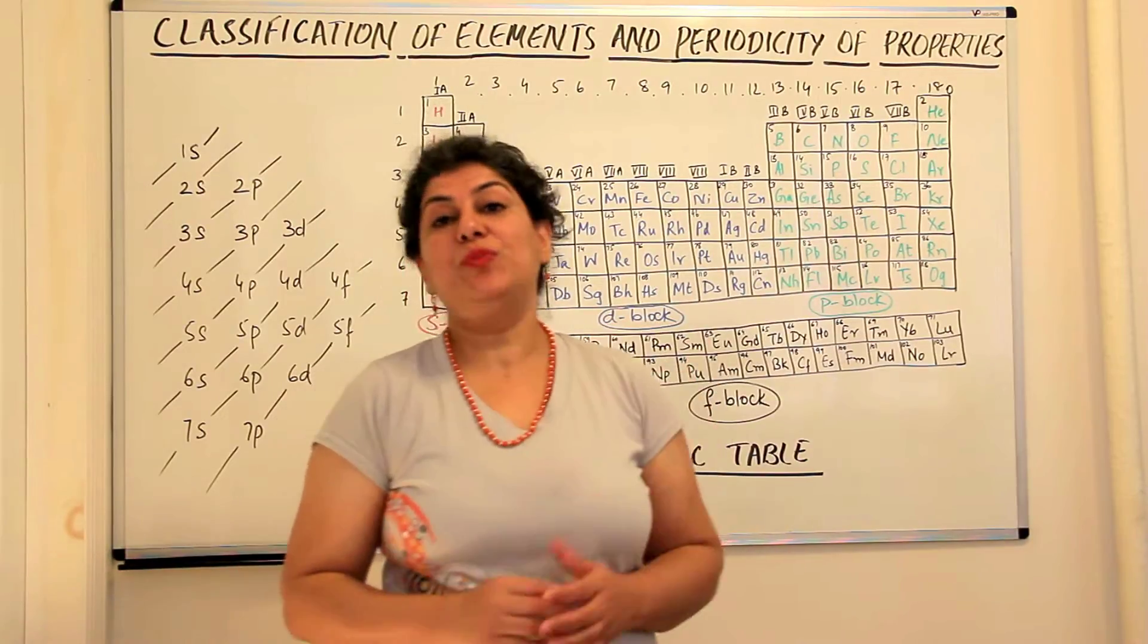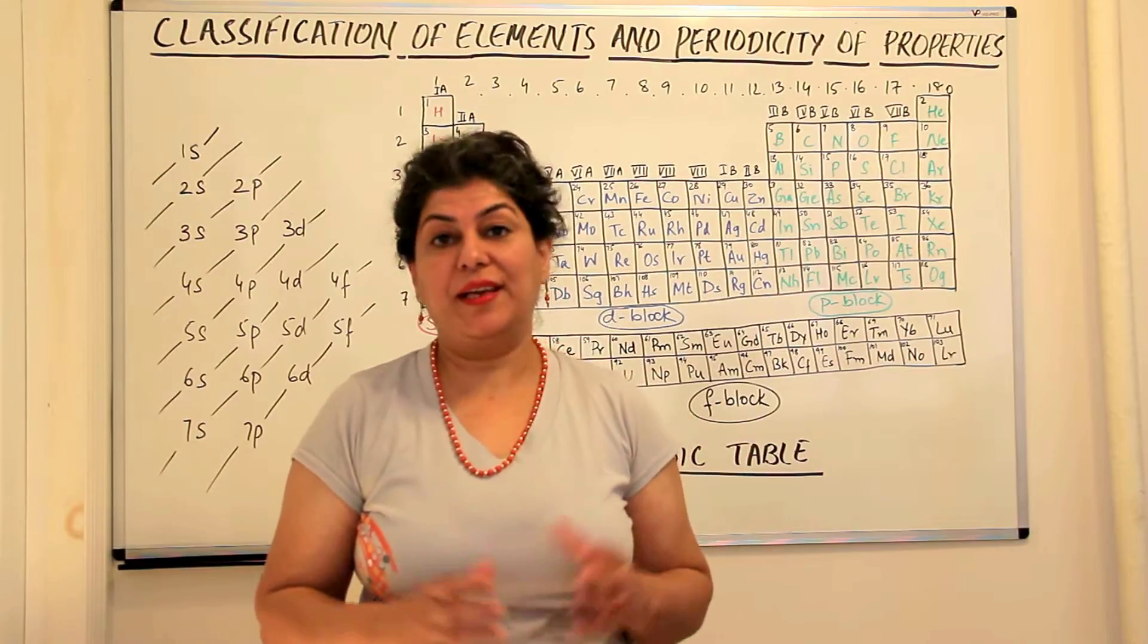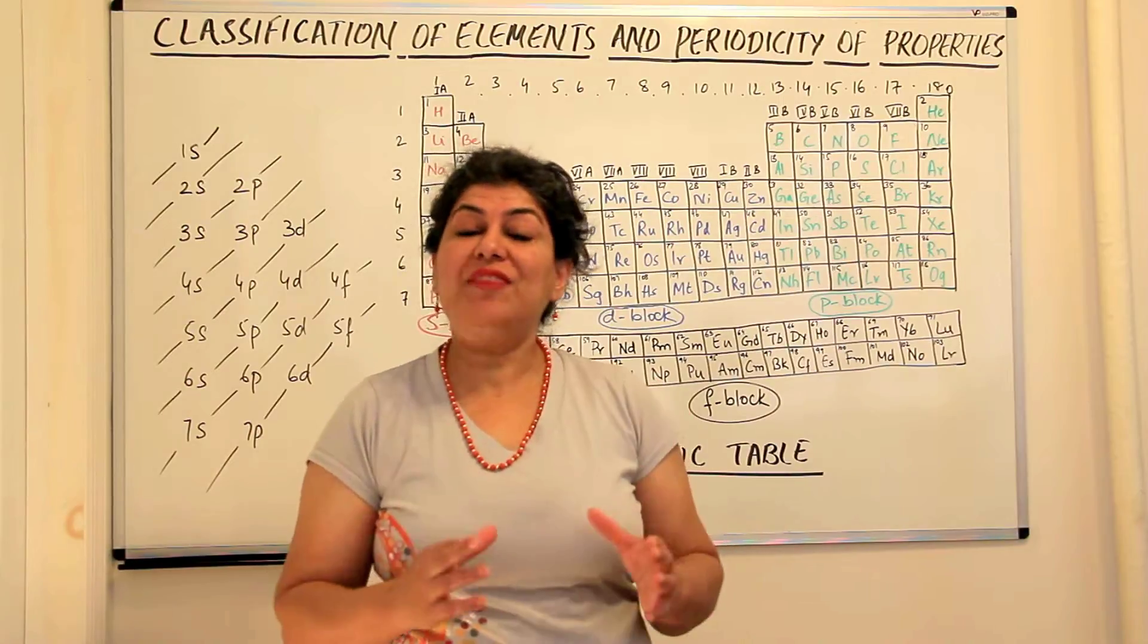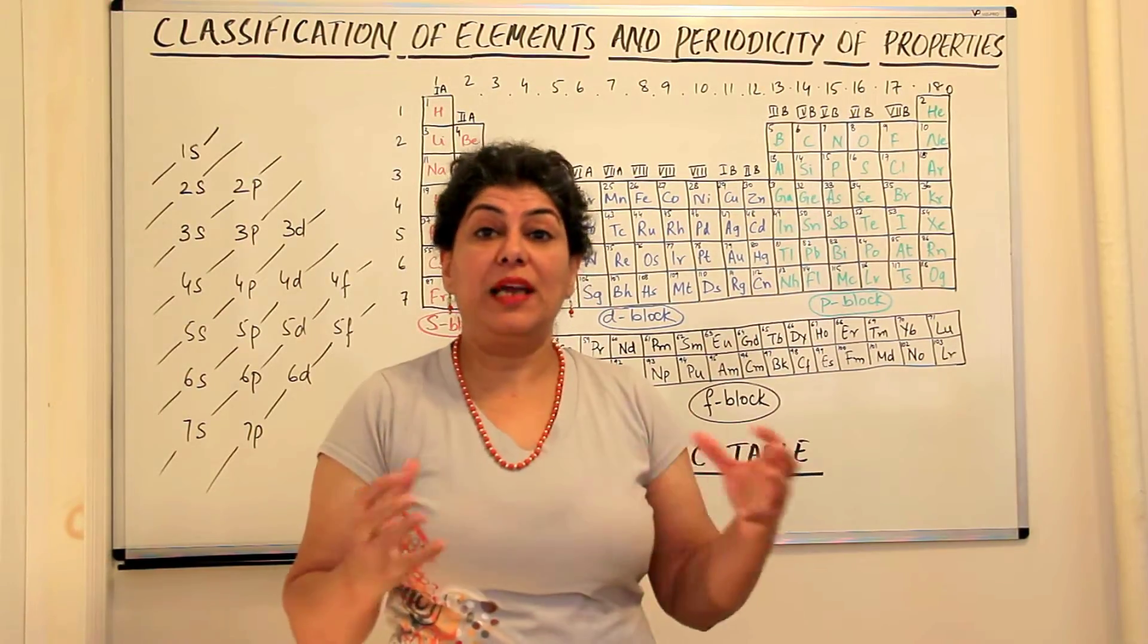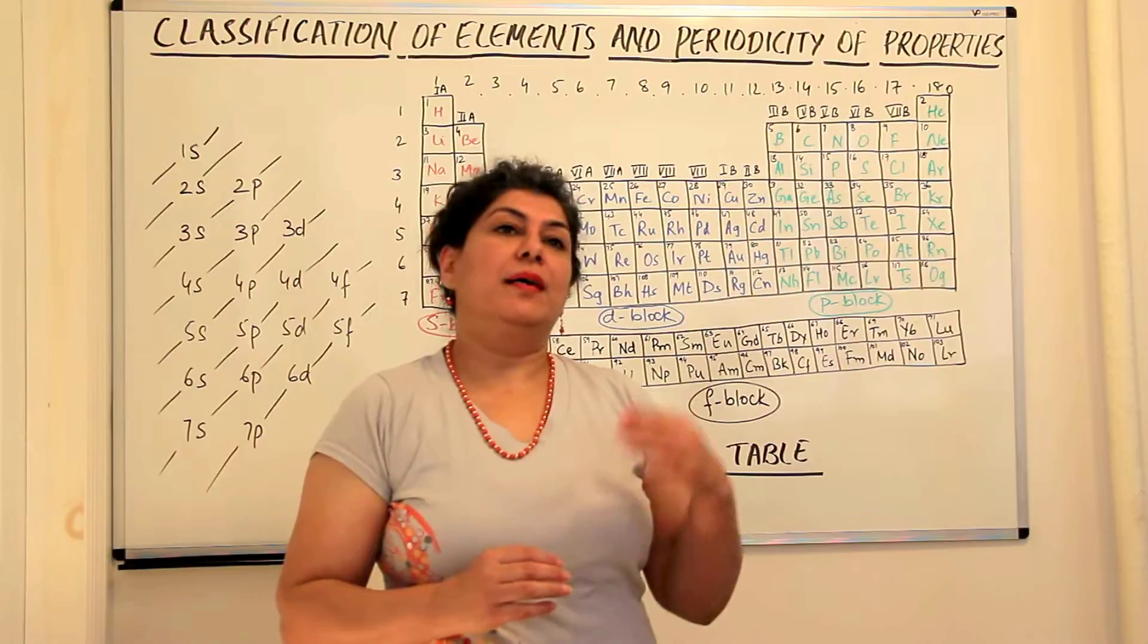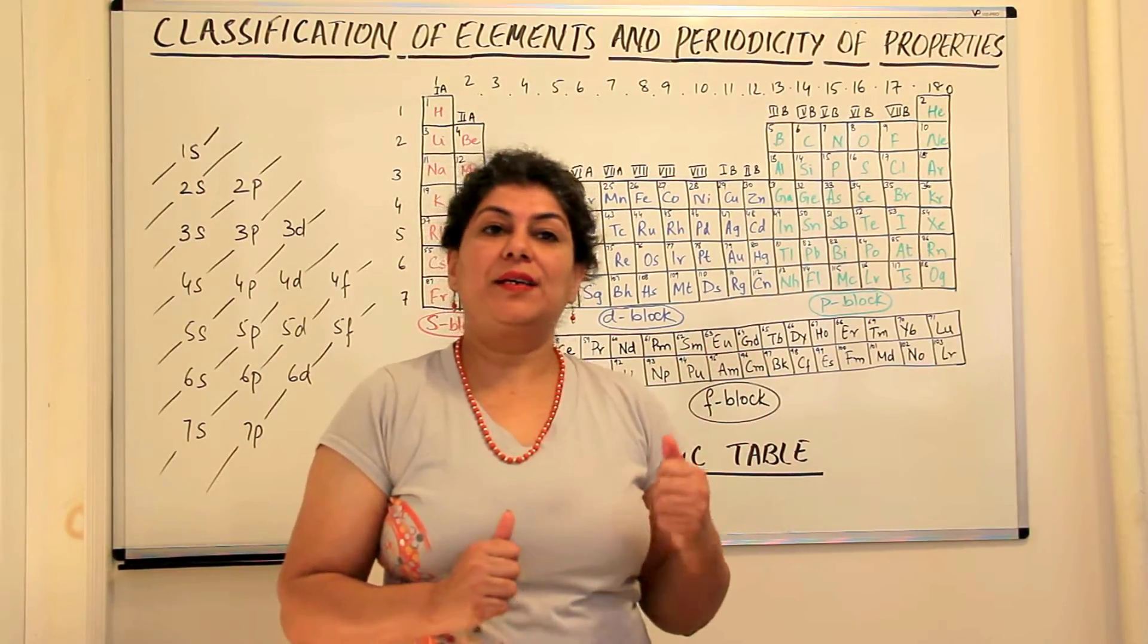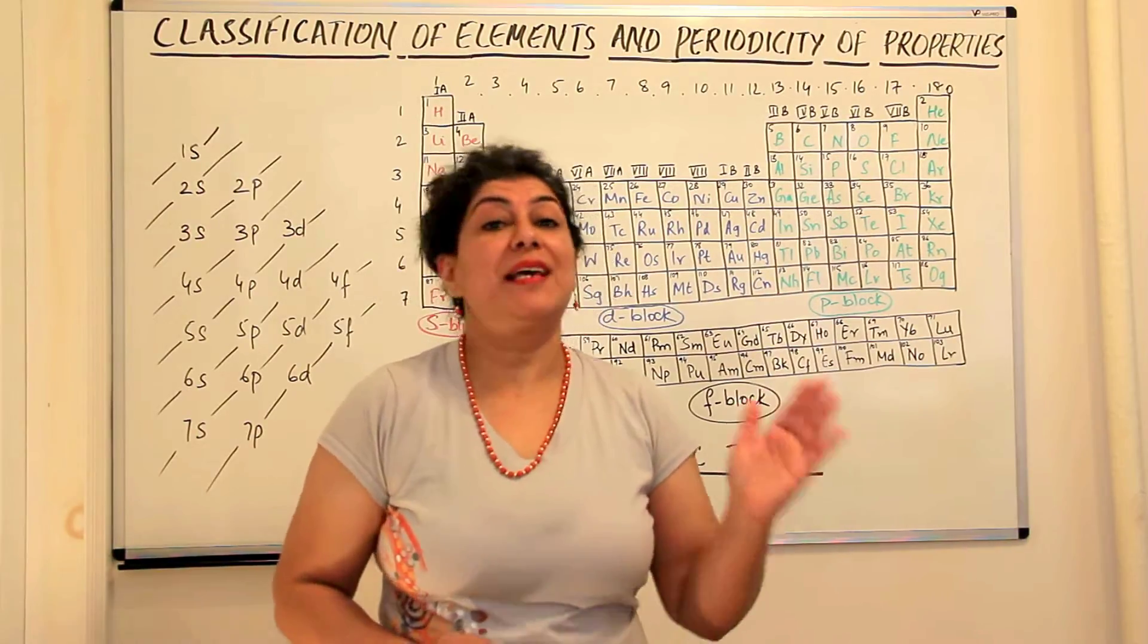In the previous videos we discussed the earlier attempts at classifying elements and I told you about Mendeleev and his genius because Mendeleev was the first scientist who could actually include all the then known elements and classify them systematically. Before him, Dobereiner could only make three triads and Newland's law of octaves was applicable only up to the element calcium. It did not work beyond that.